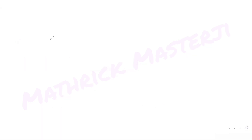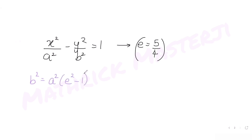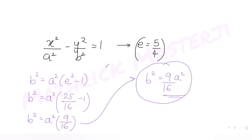For the hyperbola x²/a² - y²/b² = 1 with eccentricity e = 5/4, we use the formula b² = a²(e² - 1). Substituting e² = 25/16, we get b² = a²(25/16 - 1) = a²(9/16). So b² = (9/16)a².